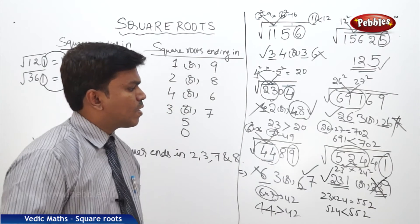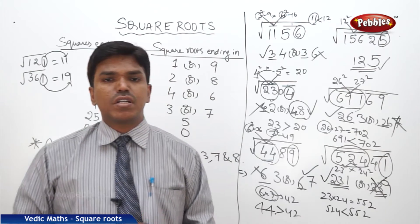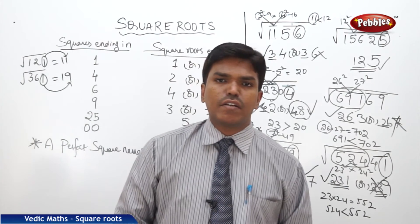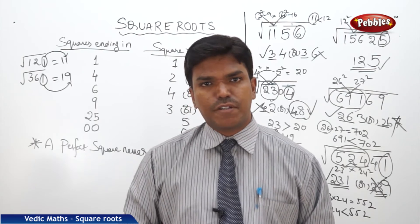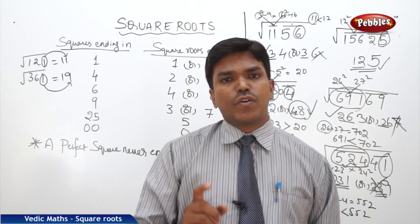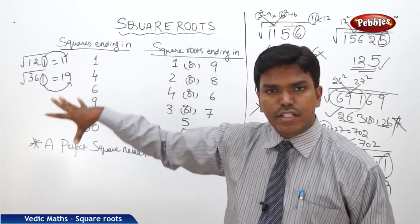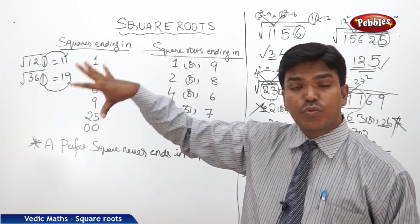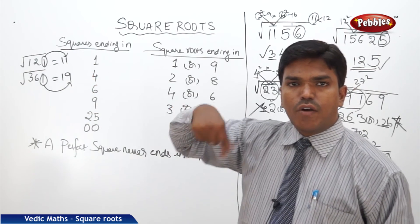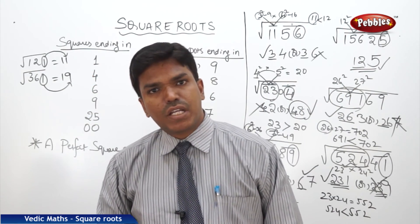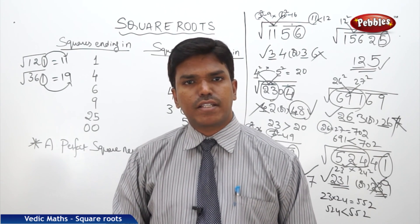Like this, we can find out the square roots of any 4-digit or 5-digit perfect square number. But remember, to find square roots easily, it is mandatory to know up to 30 squares by heart. Now we will go to our next topic: cube roots — how to find cube roots very easily.